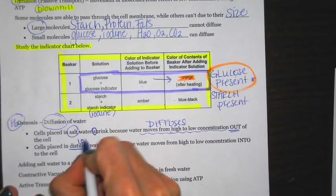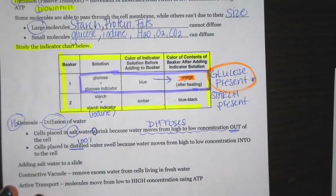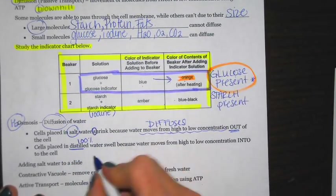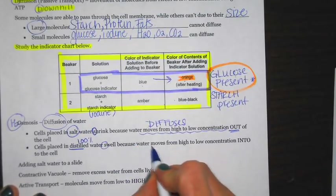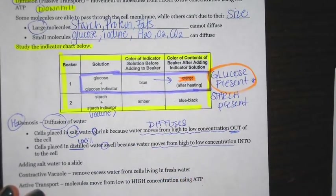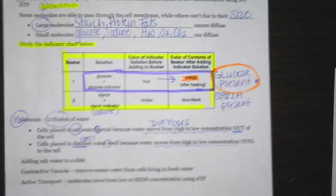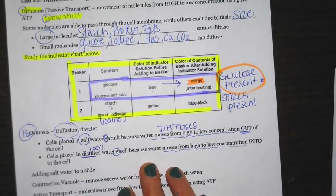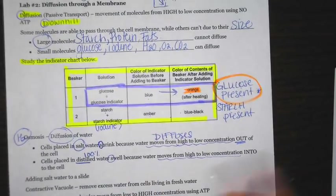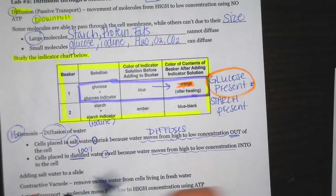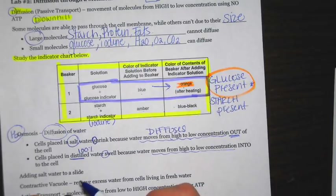When cells are placed in distilled water — which is 100% water concentration — the cell is going to swell, because water diffuses into the cell. You should also be able to label where the cell membrane is, the cell wall, and the cytoplasm in a drawing.